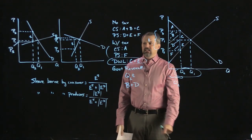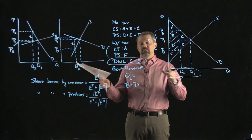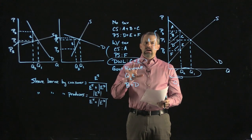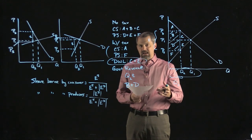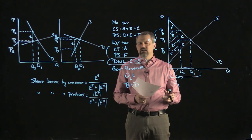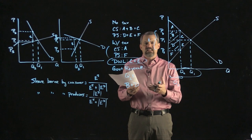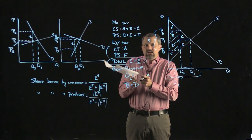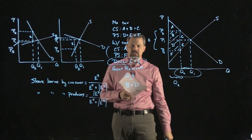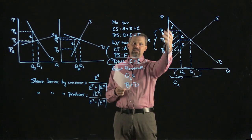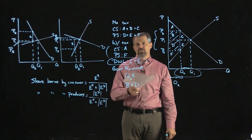So we've covered how to analyze price controls, taxes, and quotas — both graphically and mathematically. For taxes, change the intercept of the inverse demand or supply curve, set them equal to solve for quantity, plug back in for prices, then calculate areas for consumer and producer surplus. I'll see you in another video.